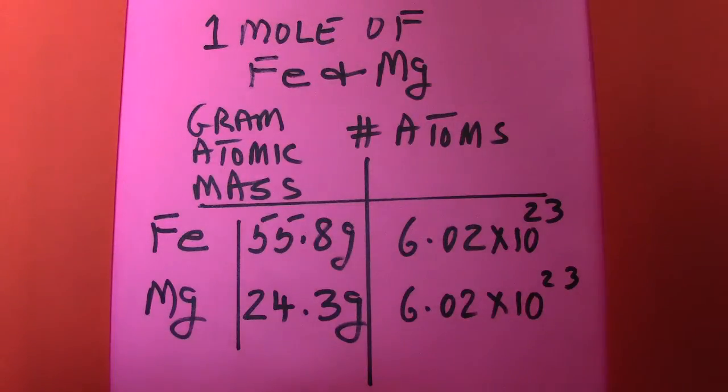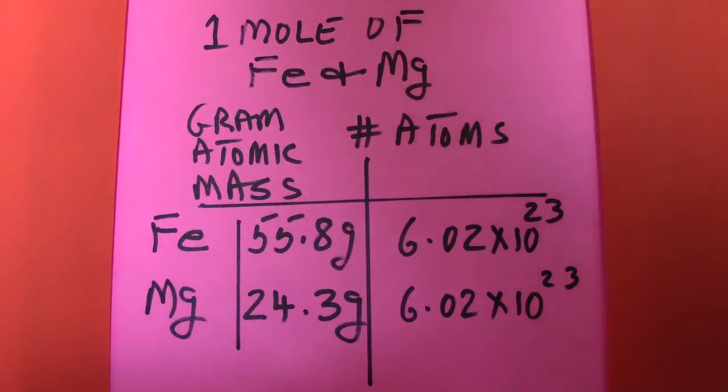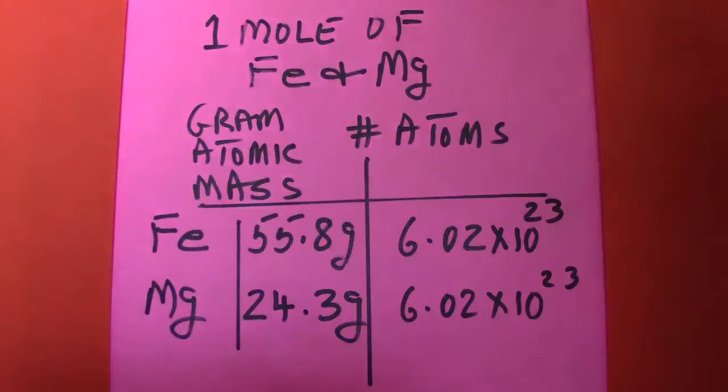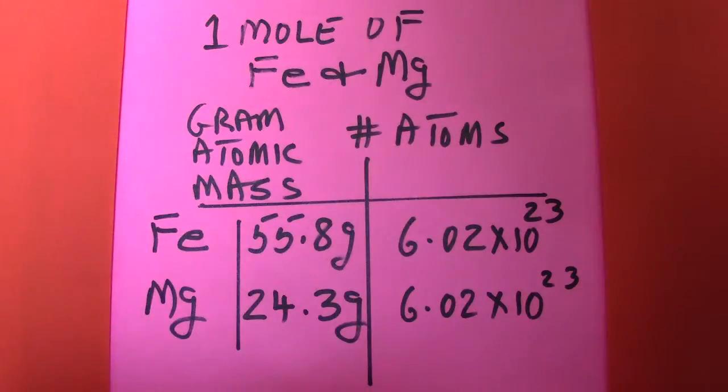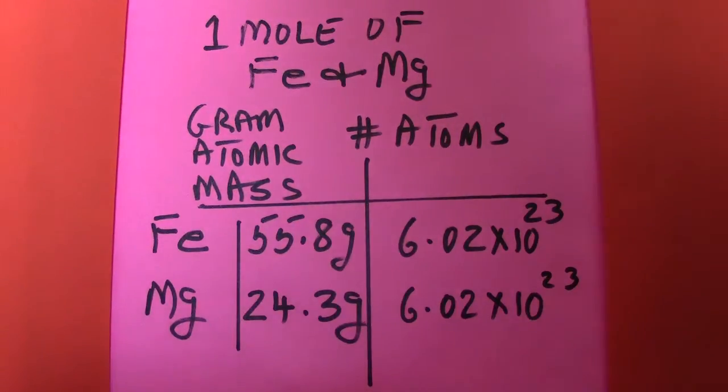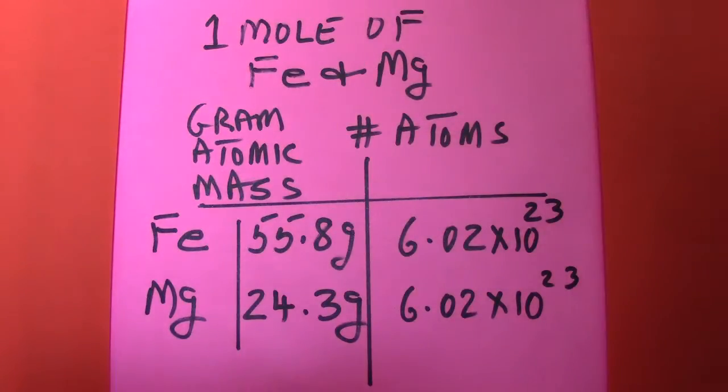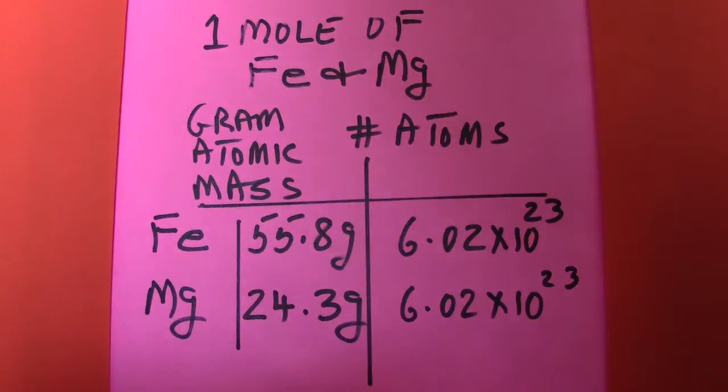Or if you are asked how many atoms are in 0.35 moles of iron you take 6.02 times 10 to the power of 23 and multiply it by 0.35. So you can go back and forth between mole and the number of atoms and the gram atomic mass by doing simple arithmetic.